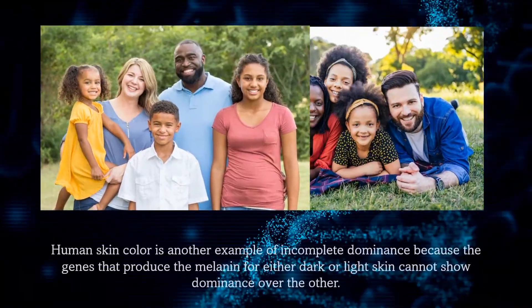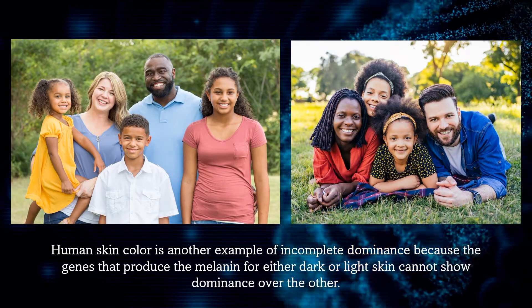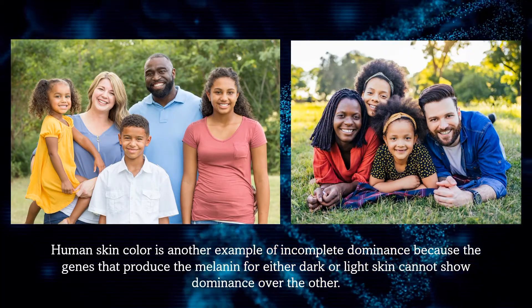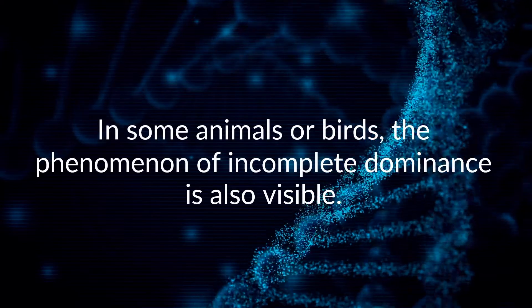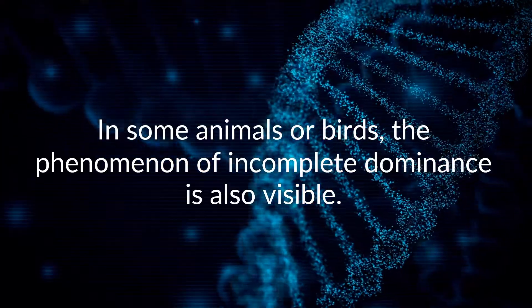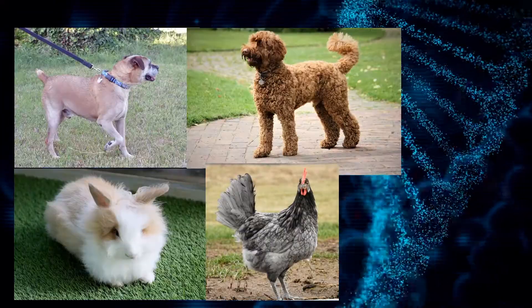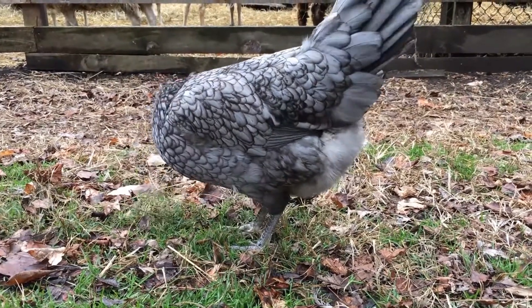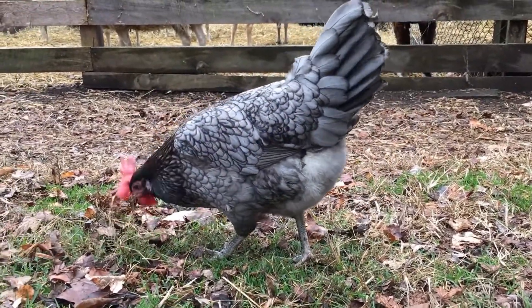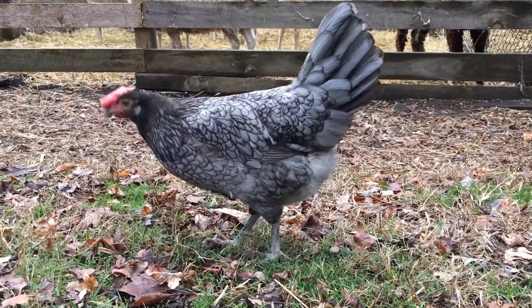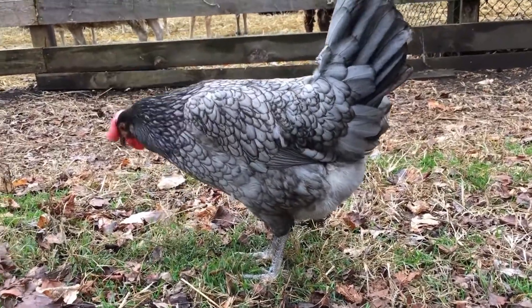Human skin color is another example of incomplete dominance because the genes that produce melanin for either dark or light skin cannot show dominance over the other. In some animals or birds, the phenomenon of incomplete dominance is also visible. Several examples can be seen in chickens, rabbits, dogs, cats, and horses. A chicken found in Spain is an example: an offspring shows incomplete dominance in its feathers, as parents with a white-feathered male and black-feathered female breed to produce an offspring with blue and thin feathers.